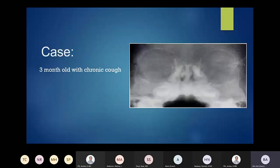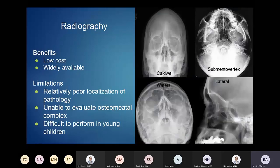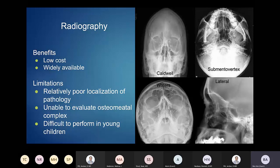Radiographs: the benefits are they're really quick, easy, and widely available — every clinic has an x-ray machine, not everyone has an MR. However, they're poor at localizing where the sinusitis is most severe. You can't really get a good look at the osteomeatal complexes. They're also difficult with younger children because of motion, and correct patient positioning is critical.